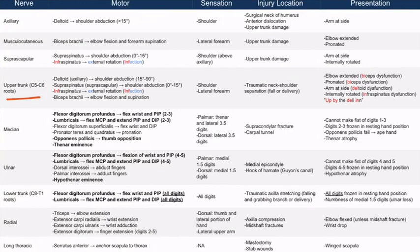Going back to the upper trunk table, the motor column lists: the deltoid muscle performing shoulder abduction above 15 degrees, the supraspinatus performing the first 15 degrees of abduction, the infraspinatus causing external rotation — remember infection — and the biceps brachii causing elbow flexion and supination. The upper trunk also contains nerves providing sensory innervation to the shoulder and the lateral forearm: the axillary and suprascapular nerves for the shoulder, and the musculocutaneous nerve for the lateral forearm.